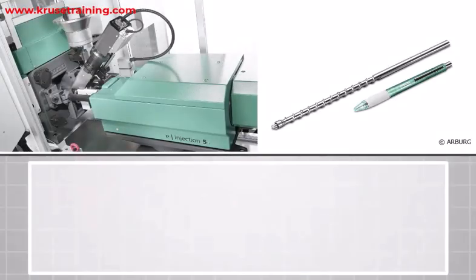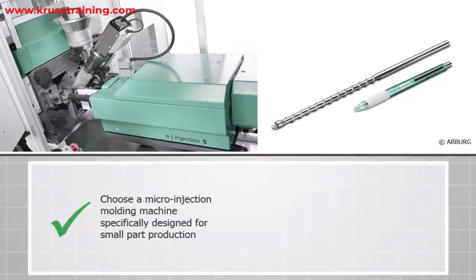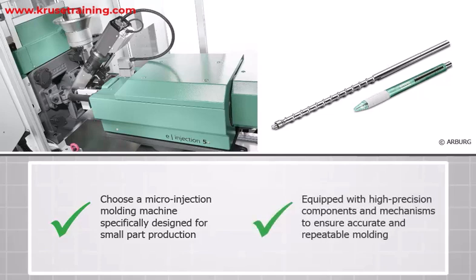Machine Selection: Choose a micro-injection molding machine specifically designed for small part production. These machines are equipped with high-precision components and mechanisms to ensure accurate and repeatable molding.